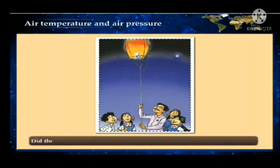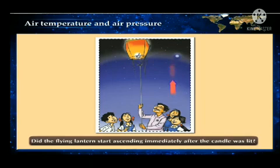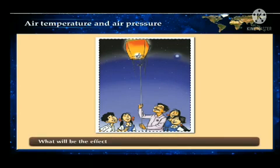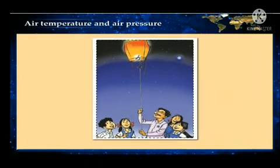Did the flying lantern start ascending immediately after the candle was lit? The air in the flying lantern gets heated once a candle is lit. The hot air expands, becomes lighter and starts moving up. Therefore, the lantern is also lifted up towards the sky. In nature too, a similar phenomenon occurs. If the temperature drops, the air cools down and it becomes heavier, increasing pressure.